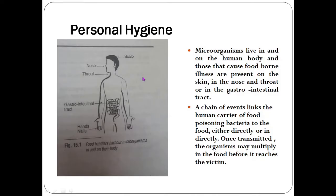What is personal hygiene? As we all know, microorganisms live in and on the human body, and those that cause foodborne illness are present on the skin, nose, throat, and in the gastrointestinal tract. Microorganisms that can cause disease are present in the nose, throat, gastrointestinal tract, hands, hand nails, and scalp — they are present everywhere. A chain of events links the human carrier of food poisoning bacteria to the food, either directly or indirectly.